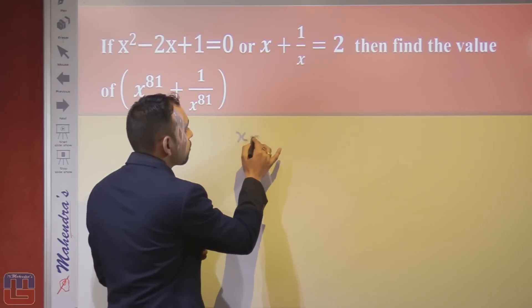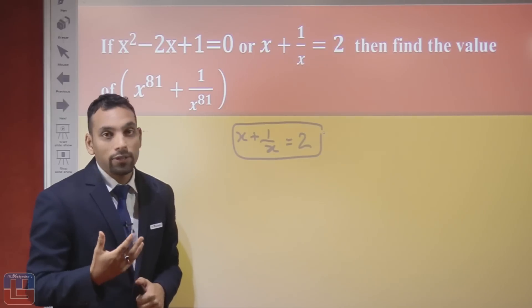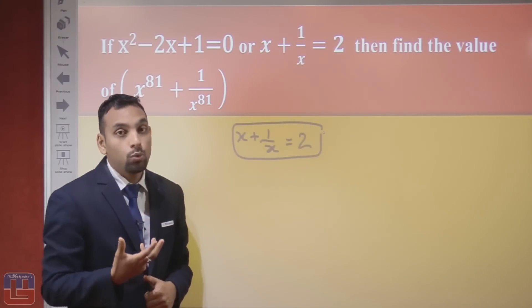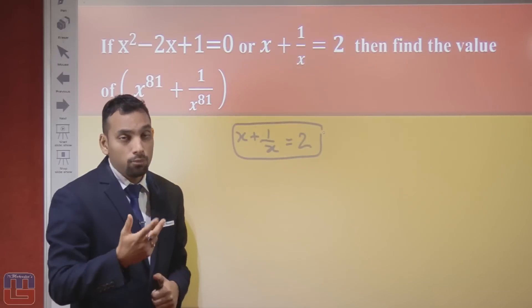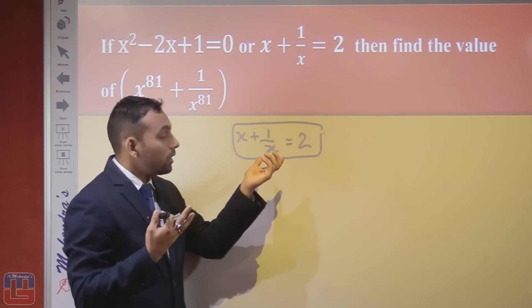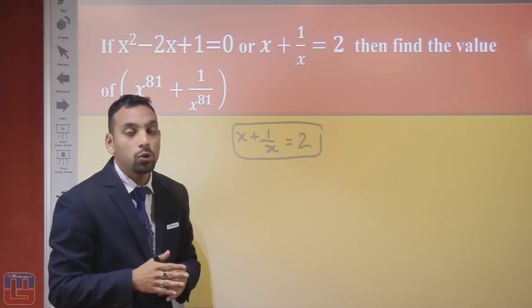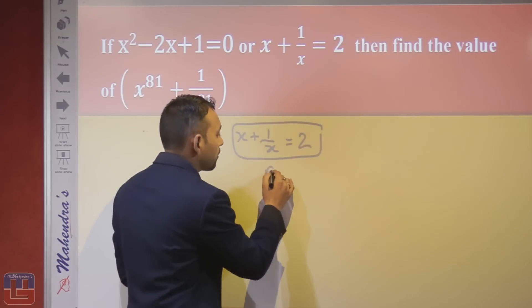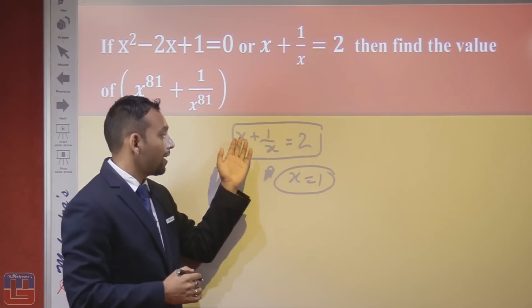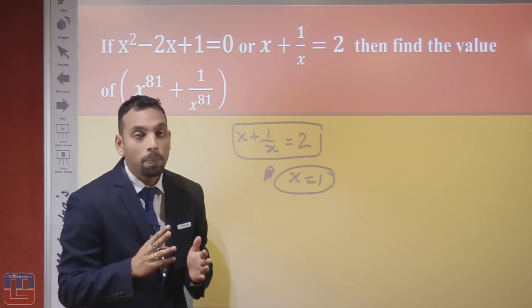Now, if x plus 1 upon x equals 2, most students get confused and think they need to multiply the power of 81 on both sides — that is the wrong concept. Logically, if you put x equals 1 into the equation, you get 1 plus 1 upon 1 equals 2, which satisfies the condition. So if x plus 1 upon x equals 2, then x is always equal to 1.